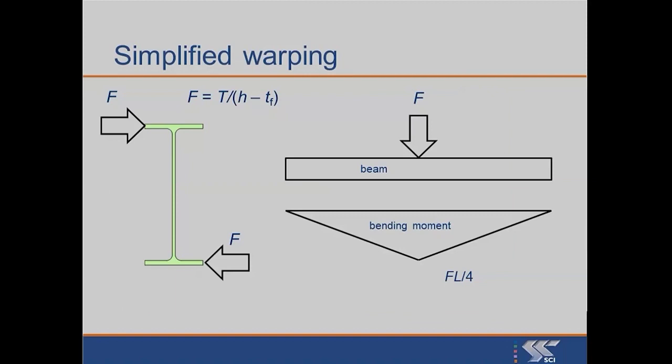Here then is a simplified approach with an open section. We're still dealing with open sections at the moment. That's to recognize that open sections provide the resistance to torsion by warping. So one flange is going to go in one direction, the other flange is going to go in the other direction.